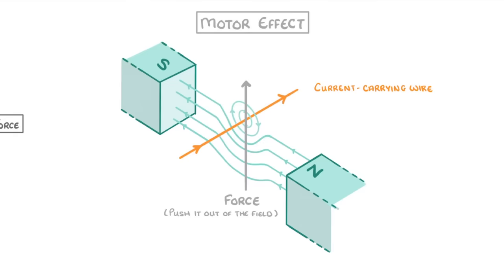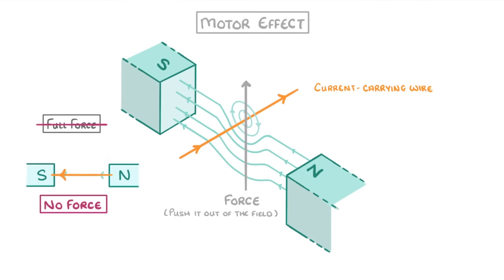However, to experience the full force, the wire has to be at exactly 90 degrees to the magnetic field. Whereas if the wire is at a slight angle, it will feel slightly less force. And if the wire was running in the same direction as the field, then it would feel no force at all.